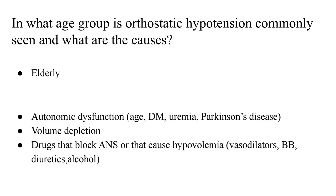Orthostatic hypotension is a very prevalent finding in clinical practice and easy to miss if you don't look out for it. It is most commonly seen in the elderly due to multiple causes. One reason is autonomic dysfunction, either from age itself or secondary to diabetes mellitus, uremia, or Parkinson's disease. Second is volume depletion, as the elderly are susceptible and tend to forget adequate water intake. Third is drugs that block the autonomic nervous system or cause hypovolemia — for example, vasodilators, beta blockers, diuretics, and alcohol.